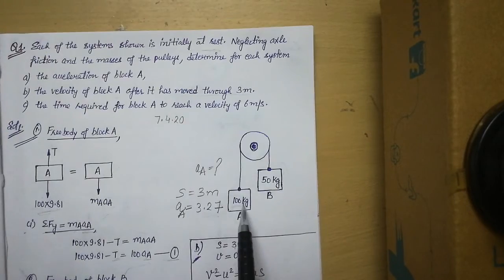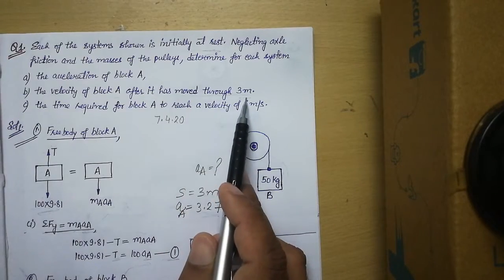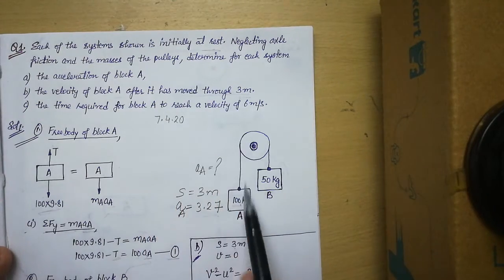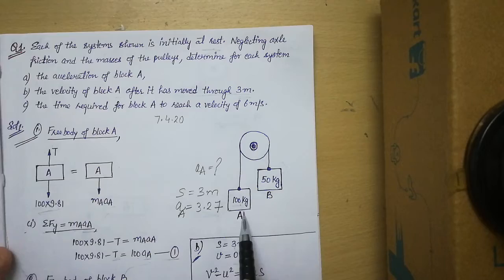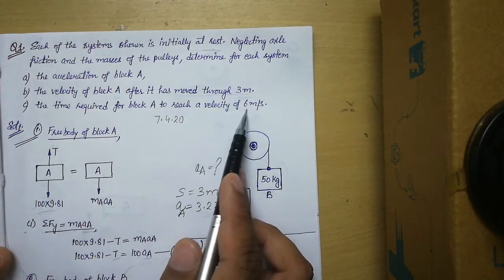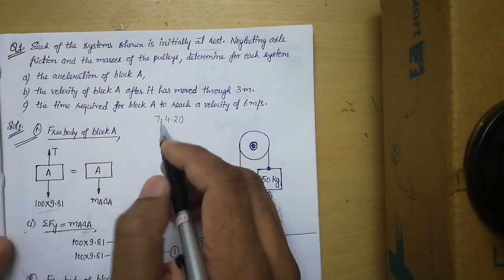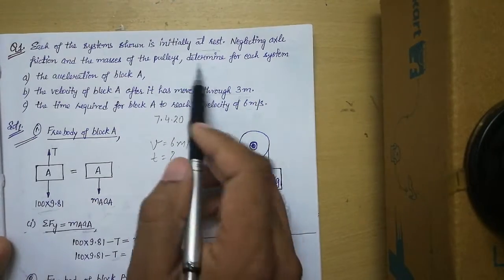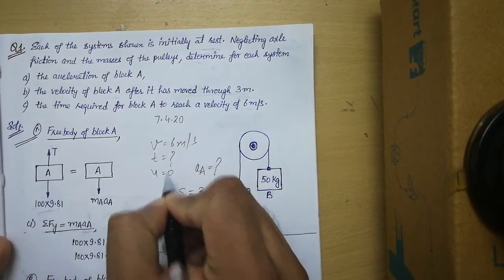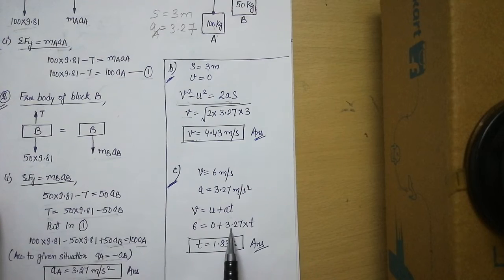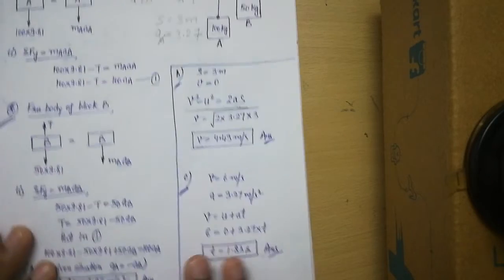For the third part, we need the time required for block A to reach a velocity of 6 meters per second. We have final velocity v = 6 m/s, initial velocity u = 0, and acceleration A_A already calculated. Using the equation v = u + at, with u = 0 and knowing A, we solve for t to get our third answer.